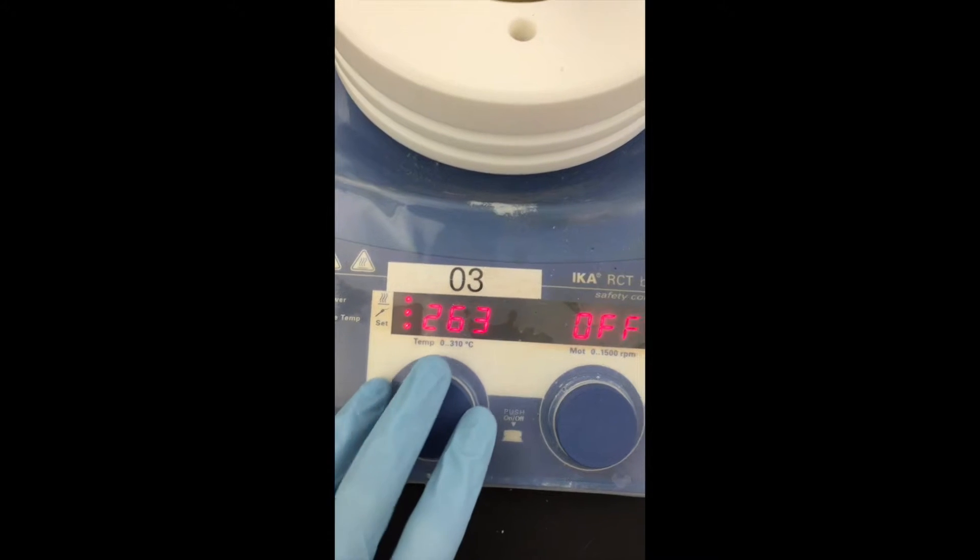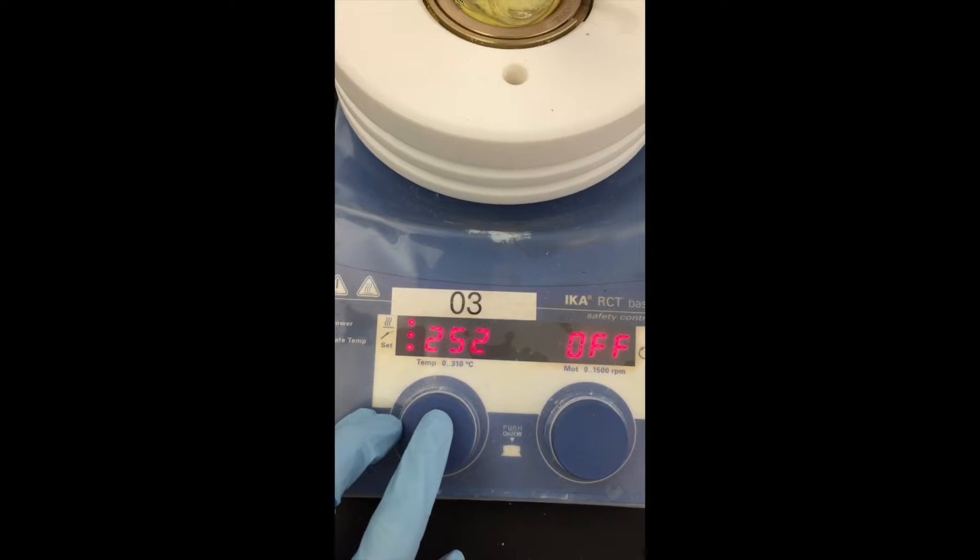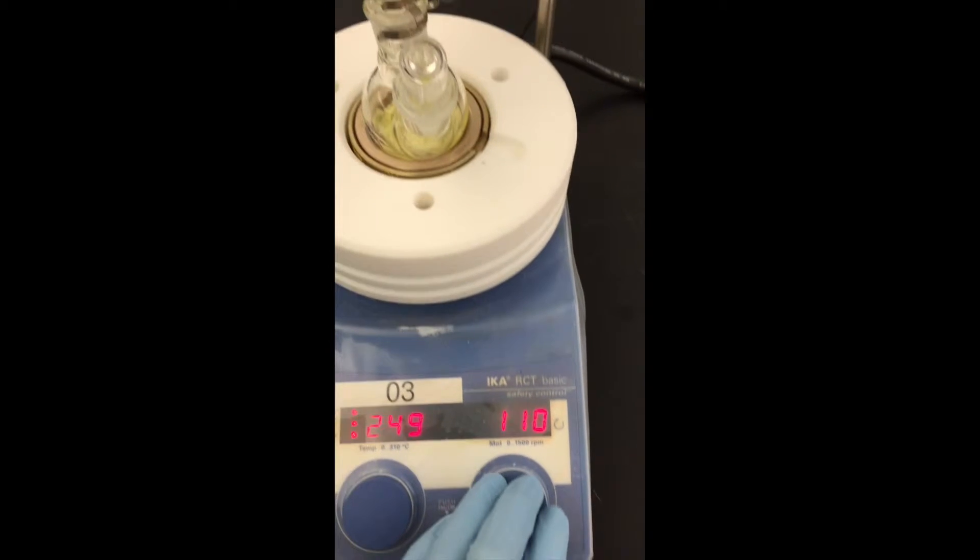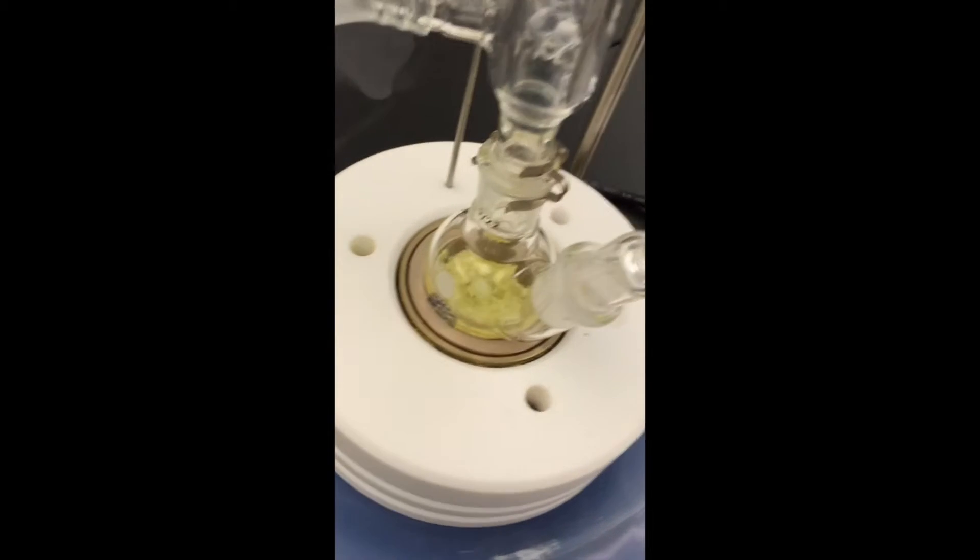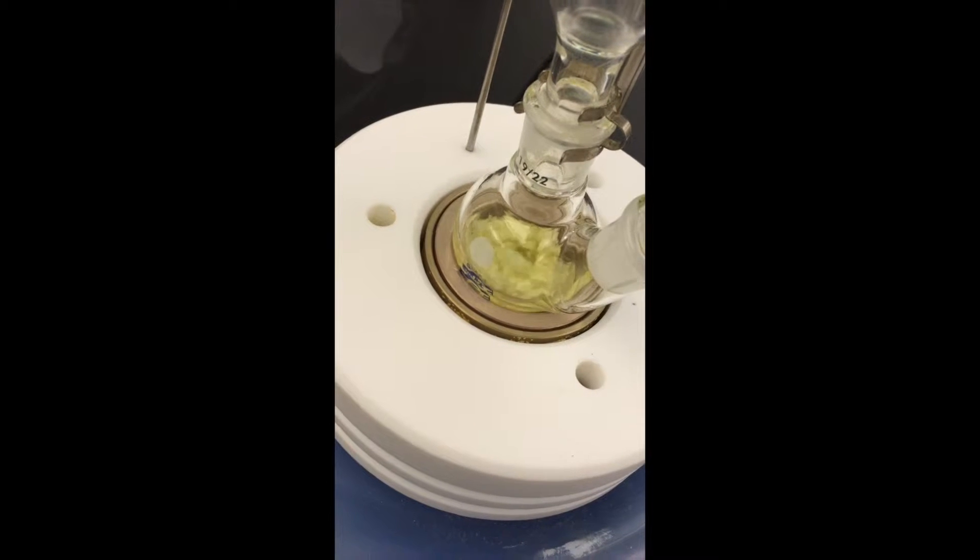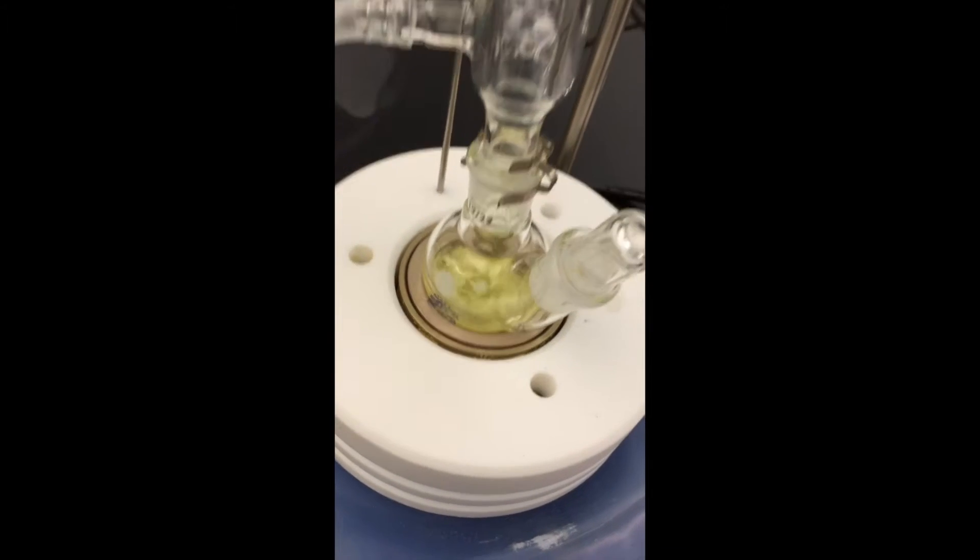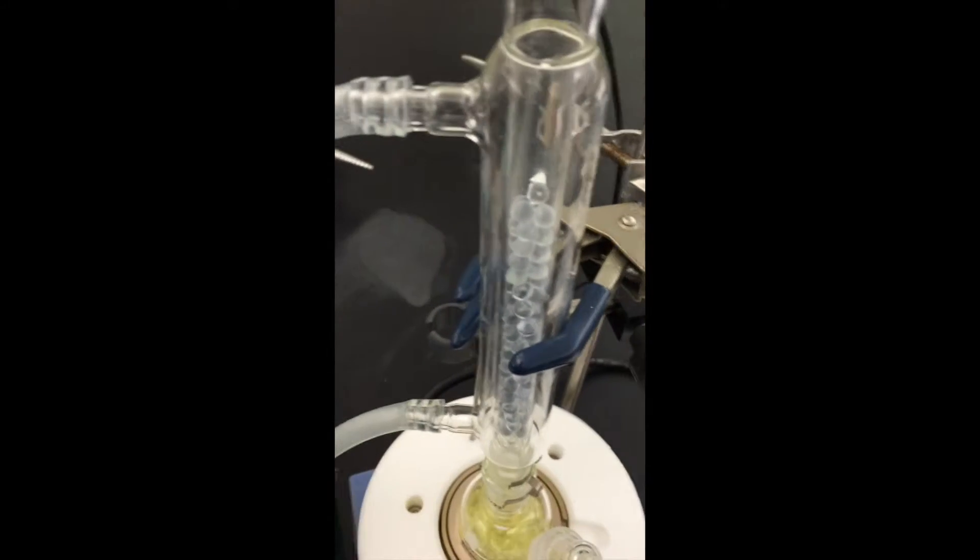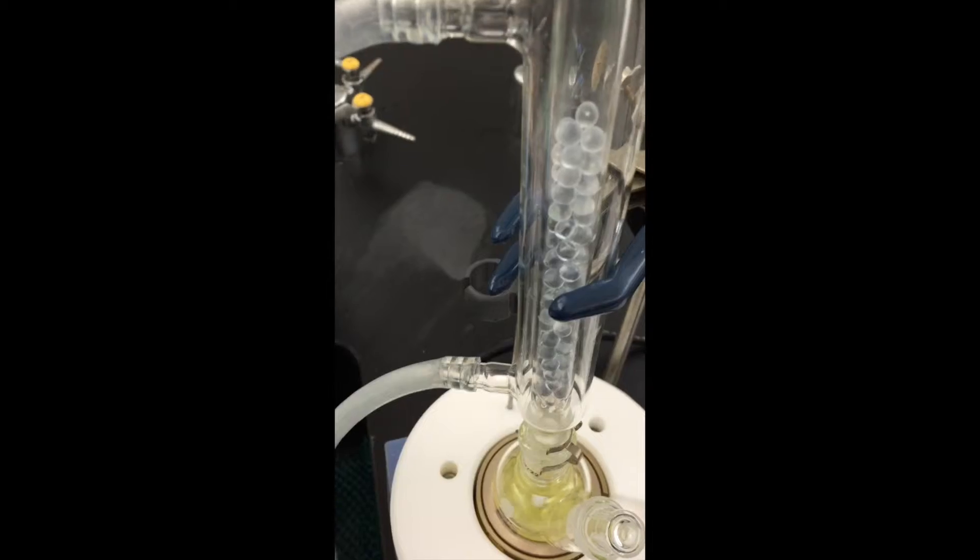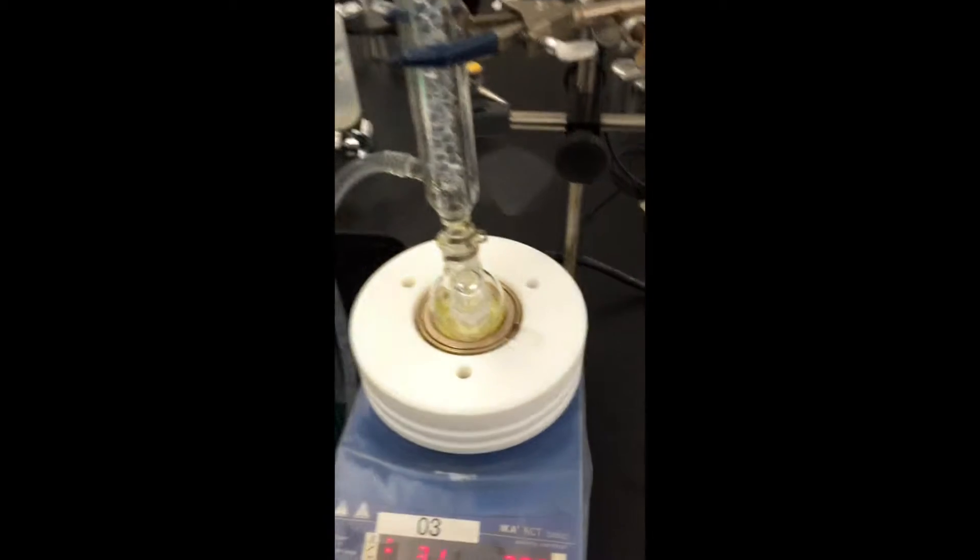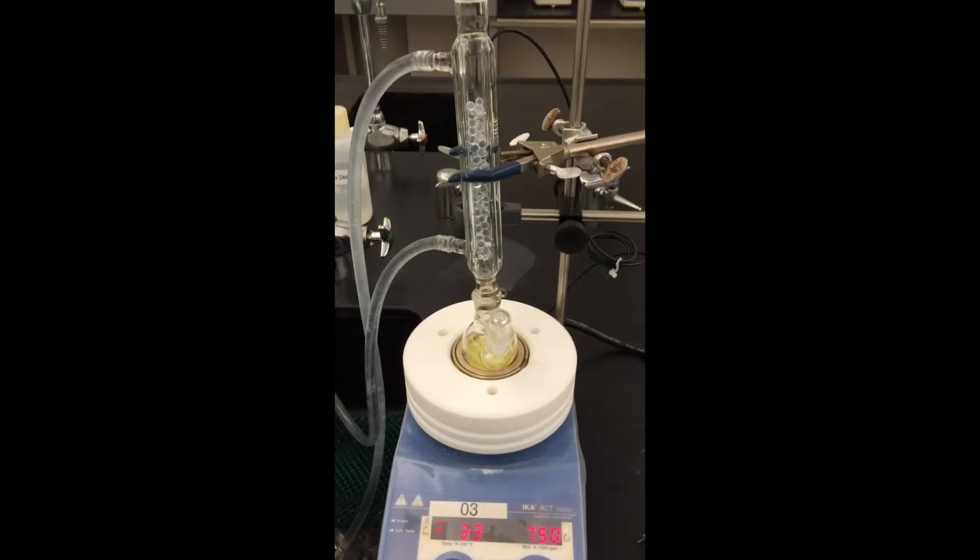We are going to set to 250 degrees. And the magnetic stirrer in there. We are going to start stirring. And we are going to mark the time and reflux for an hour. We will turn on liquid condenser. It's running. And we will go for one hour.